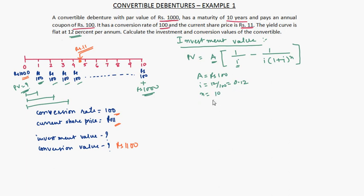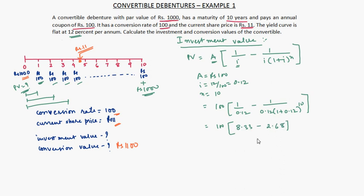Plugging in the values: 100 multiplied by bracket 1 divided by 0.12, minus 1 divided by 0.12 multiplied by bracket 1 plus 0.12 to the power 10. On calculation we get 8.33 minus 2.68, which equals 100 multiplied by 5.65, which equals rupees 565. So the present value of the annuity is rupees 565.